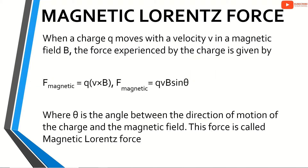Magnetic Lorentz force. When a charge Q moves with velocity V in a magnetic field B, the force experienced by the charge is given by F equals QvB sin theta, where theta is the angle between the direction of motion of the charge and the magnetic field. This force is called magnetic Lorentz force.